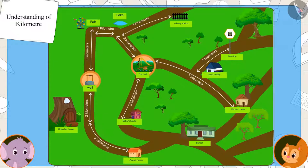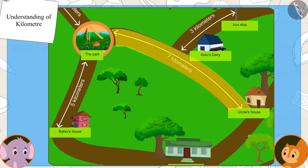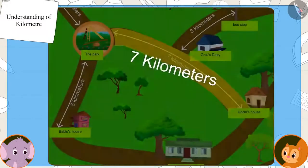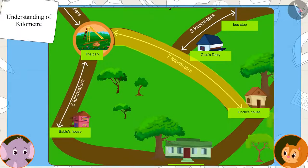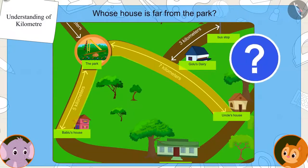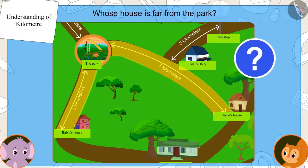Appu asks Chanda to answer a question. If uncle's house is seven kilometers from the park and Bablu's house is five kilometers away, then whose house is more distant from the park?